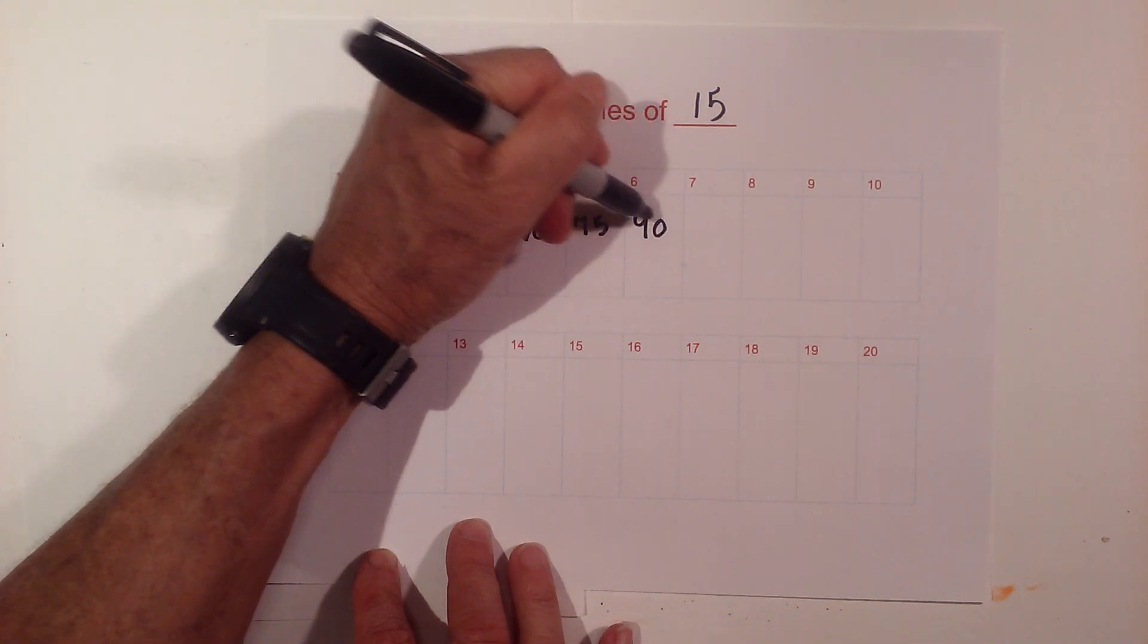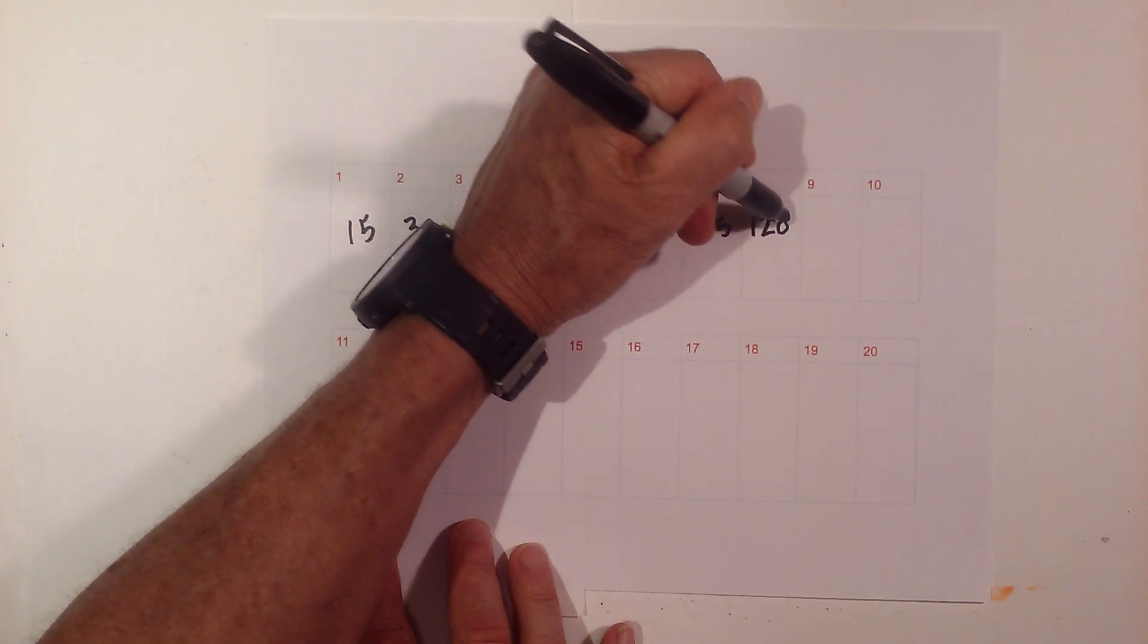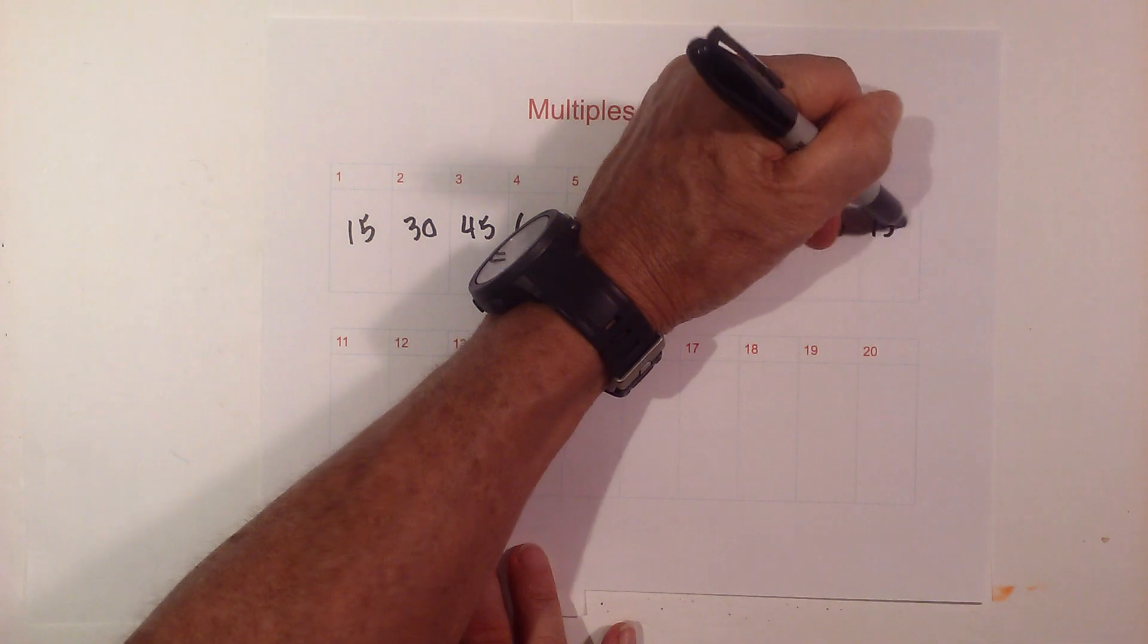Then we have 90, times 7 is 105, times 8 is 120, and 135. Then times 10 is 150.